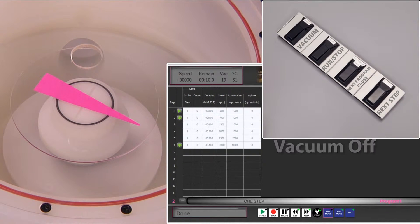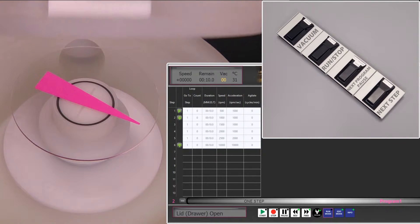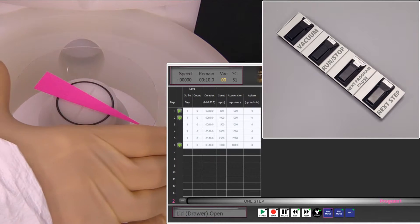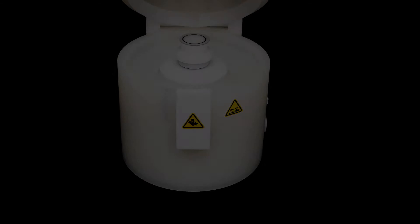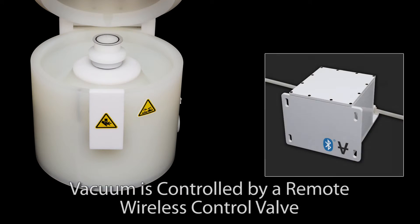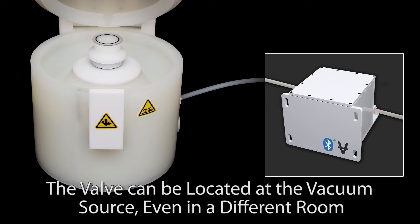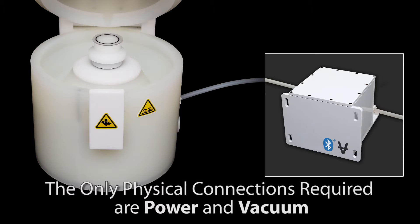Bluetooth wireless connectivity allows us to cut the cord between system and controller. Our independent wireless vacuum valve can be located at the vacuum source. The only physical connections required are power and vacuum.